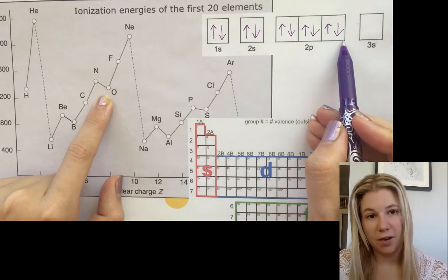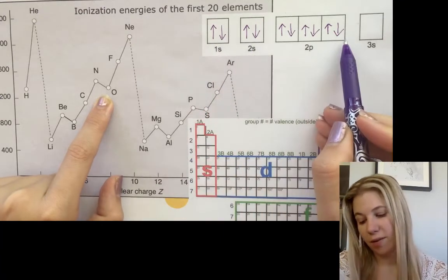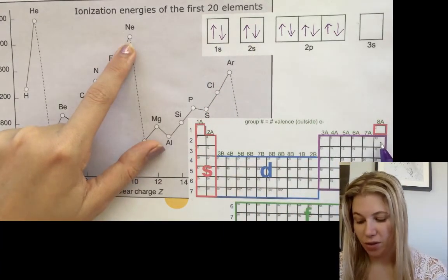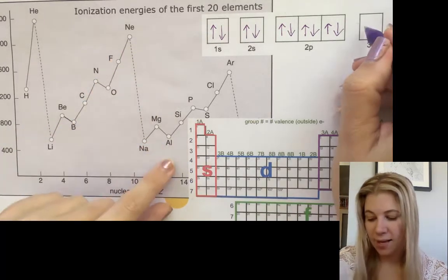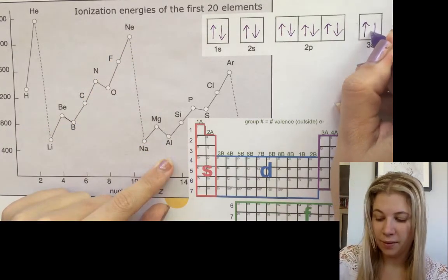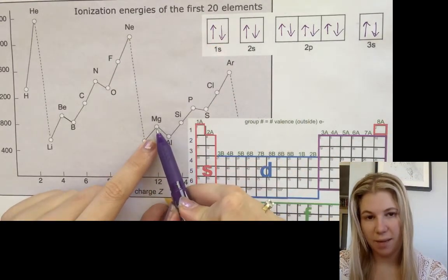And this would be neon. So if we had all of these boxes filled, we'd be looking at neon, which is over here. Then we come back down. We've got 3s and these would fill up the same way. So that would be sodium and magnesium.